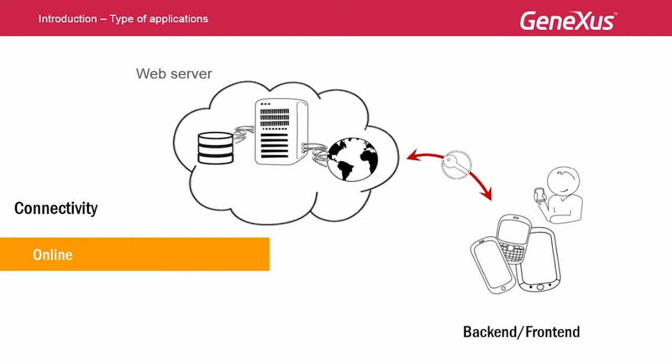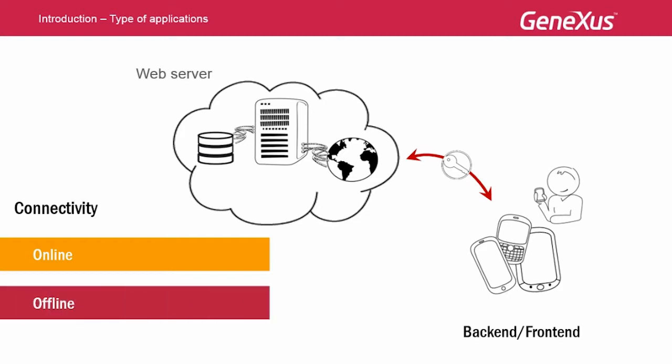One scenario that's quite important for smart devices, and mainly for certain kinds of applications, is to allow applications or part of them to continue to be executed when they're not connected to the internet. Think, for example, of when we work in rural areas, or when a salesperson has to create purchase orders on the go from different locations.